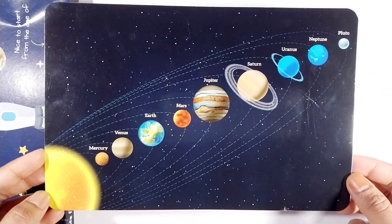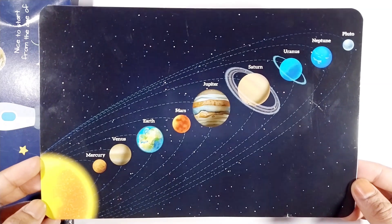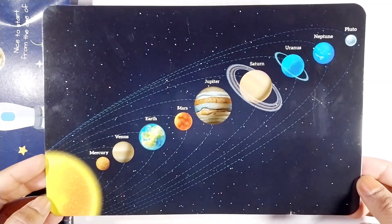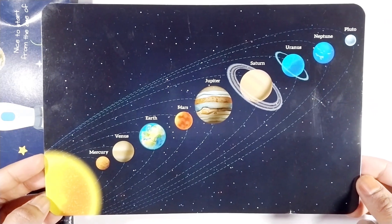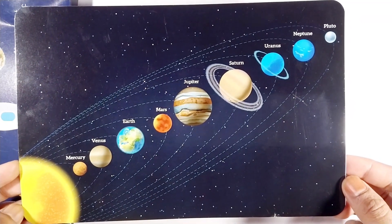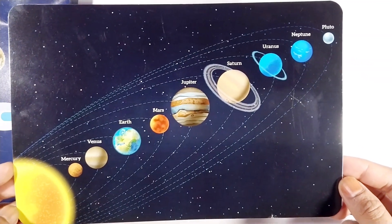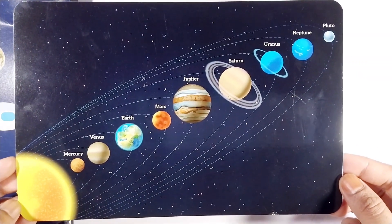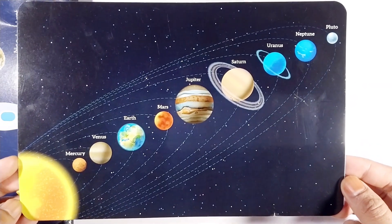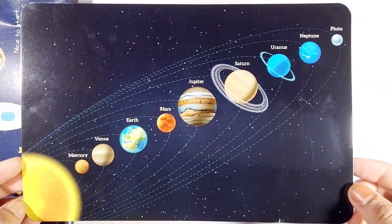First, Mercury. Second, Venus. Third, our home planet Earth. Fourth, Mars. Fifth, Jupiter. Sixth, Saturn. Seventh, Uranus. Eighth, Neptune.